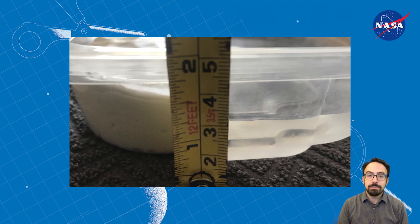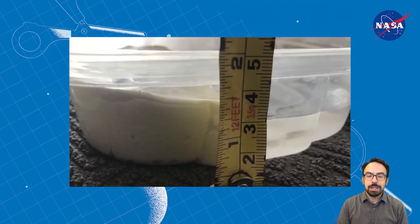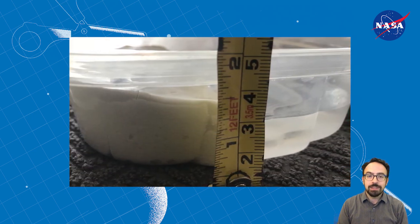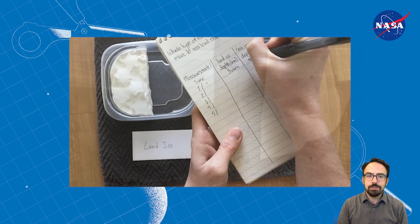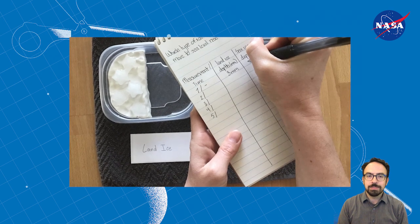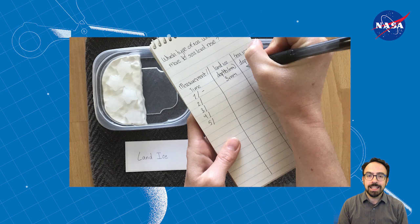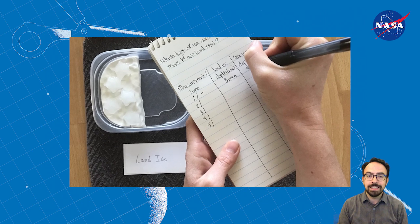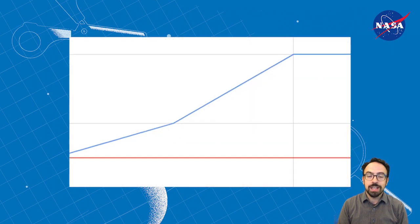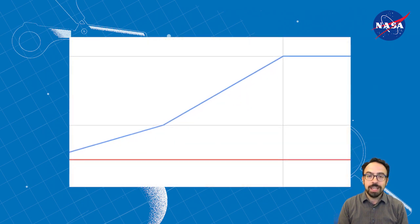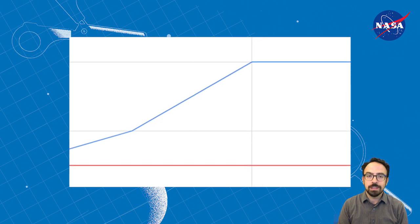Now it's time to be patient while the ice melts. While it's melting, make regular measurements of the water level in each container — maybe every minute if the ice is melting quickly, or every five minutes if it's melting slowly. Keep recording measurements until the ice is melted in each container. For an added challenge, graph your data either on paper or using spreadsheet software.